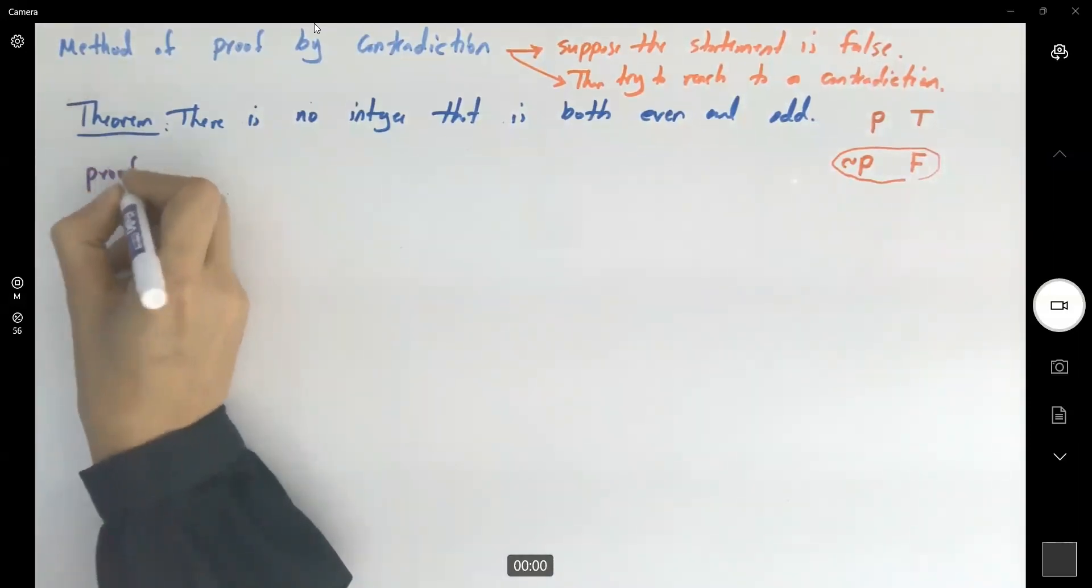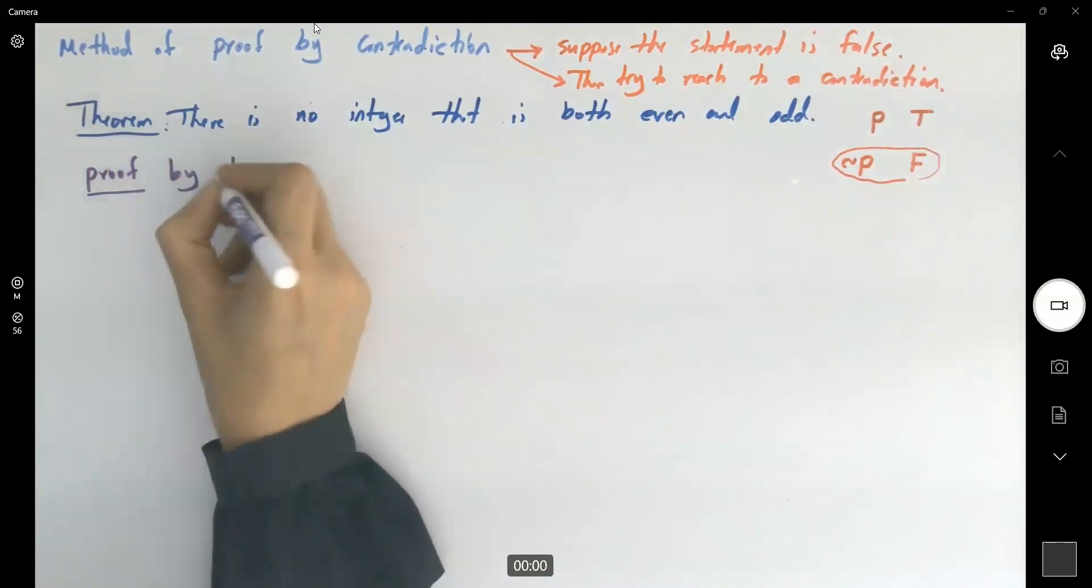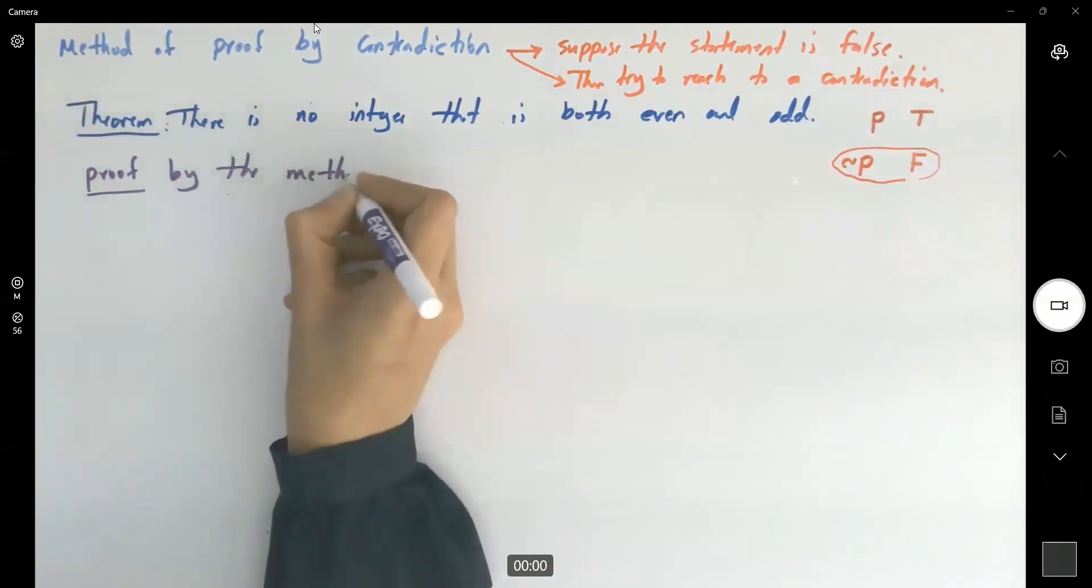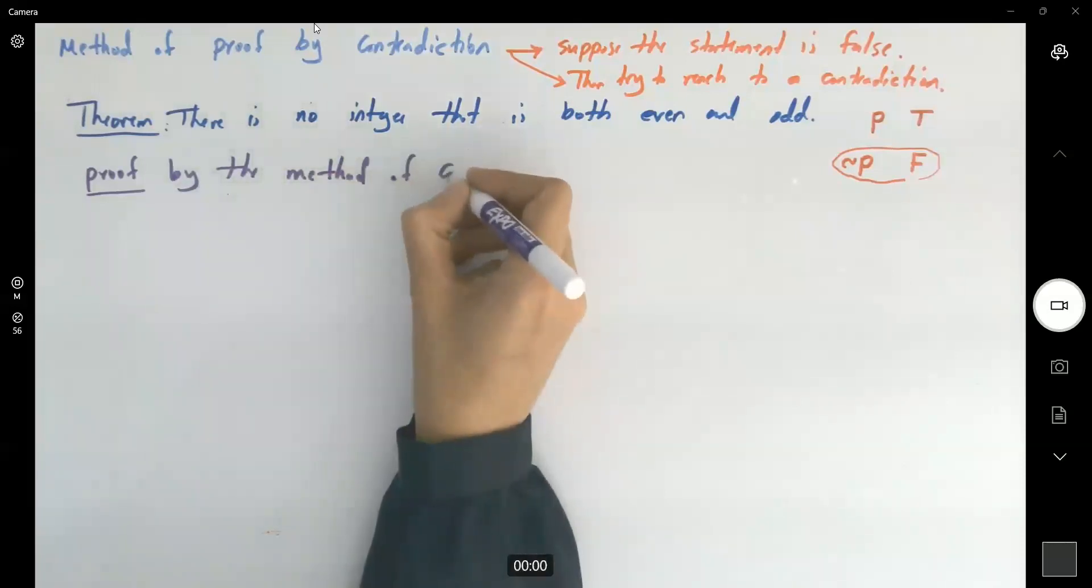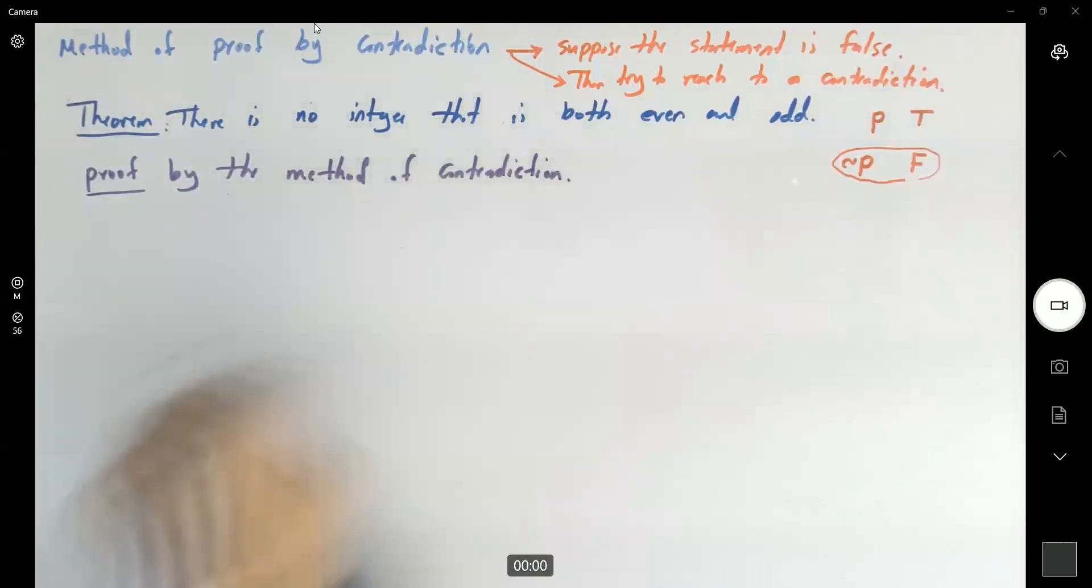Proof by the method of contradiction. What are we going to assume?